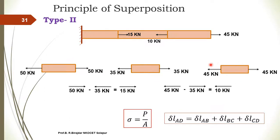Suppose if one of the forces is compressive, then how do we calculate the total change in length? If the force is tensile we add, and if it is compressive we subtract. So if the force acting on CD is compressive, then the total change in length is: change in length of AB plus change in length of BC minus change in length of CD.